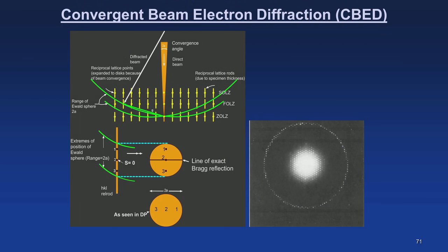Before the examples, this schematic shows another representation of what we discussed: reciprocal lattice rods with the ZOLZ, FOLZ, SOLZ and so on. With different tilting conditions you see the different Laue zones. This is a typical CBED pattern showing the zero order Laue zone, the first order Laue zone, and very faintly the second order Laue zone.